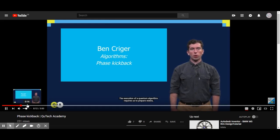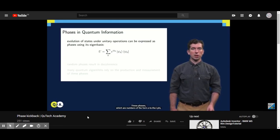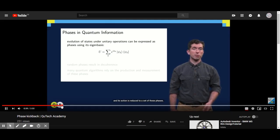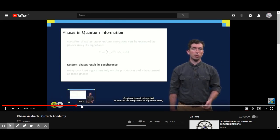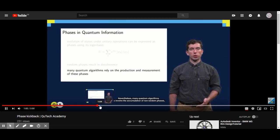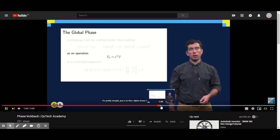The execution of a quantum algorithm requires us to prepare states, perform quantum circuits on them, and then read out the result. Today we're going to introduce a commonly used technique for this final step which uses relative phases. These phases, which are numbers of the form e^(iφ), play a very important role in quantum mechanics, quantum information and quantum computation. Every unitary, if the output is the same state, is randomly applied to components of a quantum state. Many quantum algorithms involve the accumulation of non-random phases, so there's a way to read these phases out. Some algorithms rely on encoding stuff in the phases so they can't just be ignored.